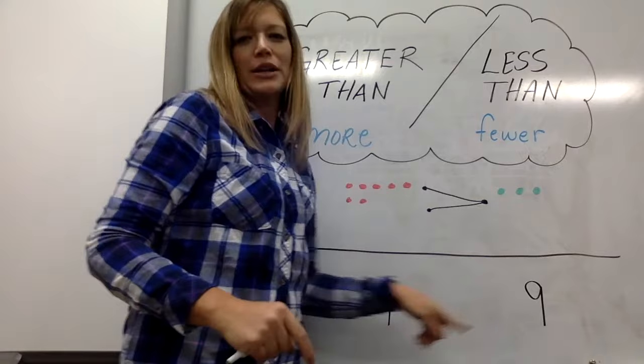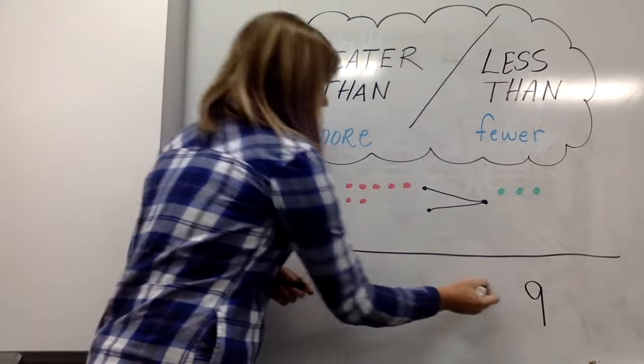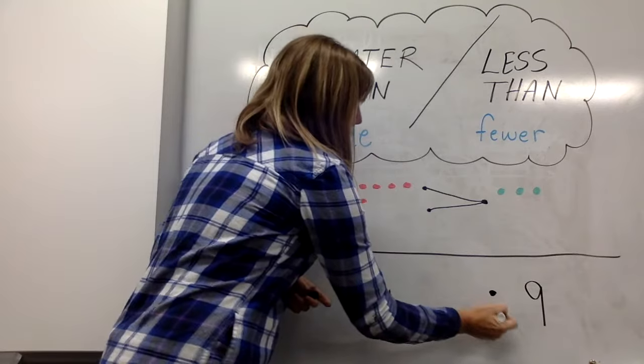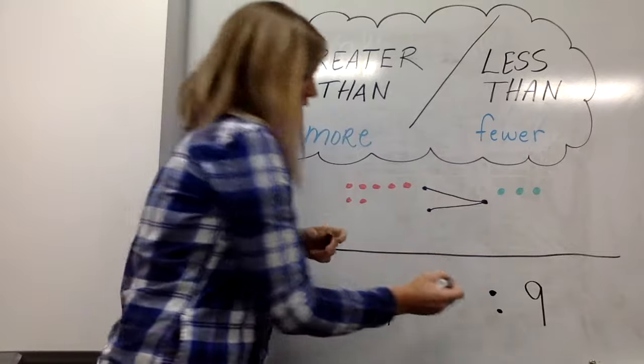Comparing four and nine. Put two dots by the number that is more. Put one dot by the number that is fewer. Connect our dots.